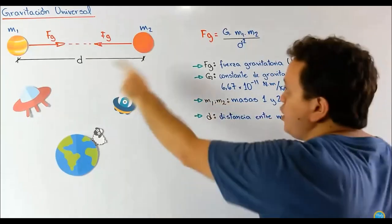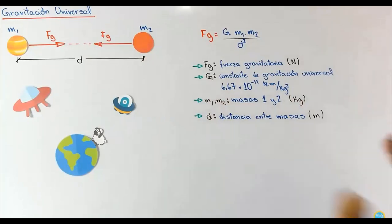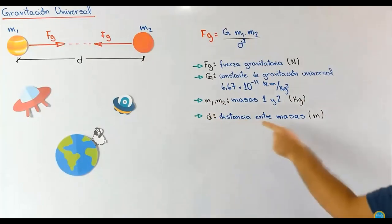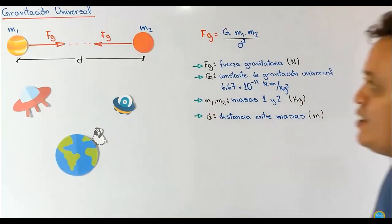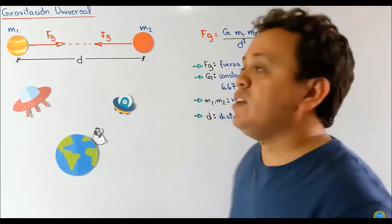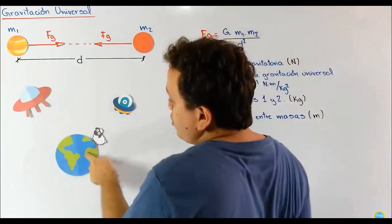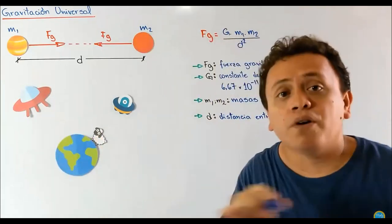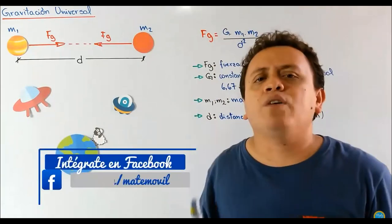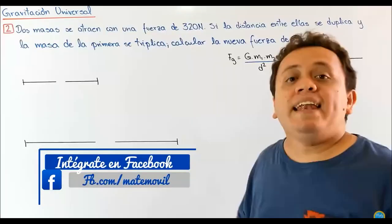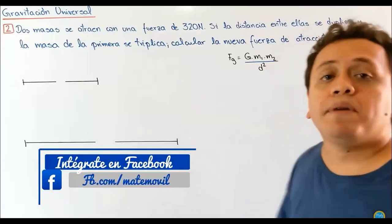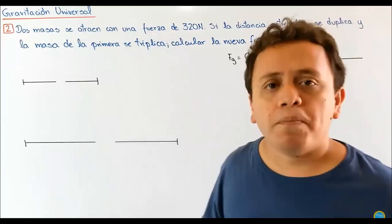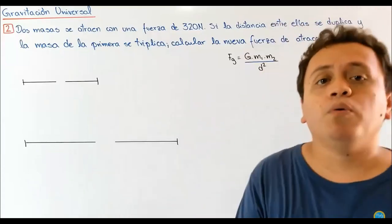M1 y M2 son las masas de los cuerpos, expresadas en kilogramos. Trabajamos todo en el sistema internacional, y lo mismo con la distancia, que se trabaja en metros. En algunas ocasiones los cuerpos están muy separados, en otras están mucho más cerca. Son diferentes casos y vamos a ver un poco de cada uno en los problemas. Debajo de este video vas a encontrar una guía con muchísimos problemas, algunos de los cuales resolveremos juntos en los videos.